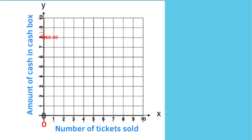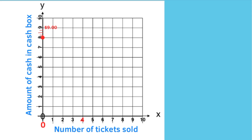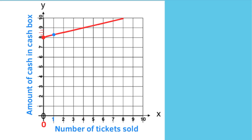At the start, when zero tickets were sold, there was $8 in the cash box. After one ticket, $8.25; after two tickets, $8.50; after three tickets, $8.75; after four tickets, $9.00. I'll put a point in blue to represent one, two, three, and four tickets sold.